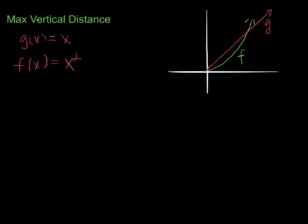I'm looking for the maximum vertical distance between zero and one. The way I'm going to go about doing this is thinking, let's say I wanted to find the vertical distance at any x value. Now, at this x value, what's the vertical distance between g and f?